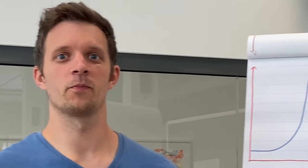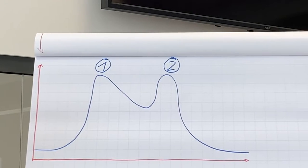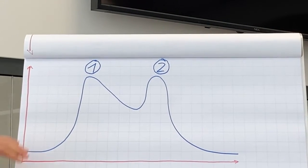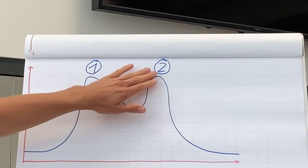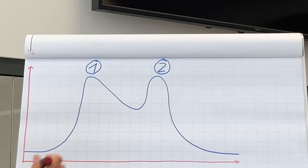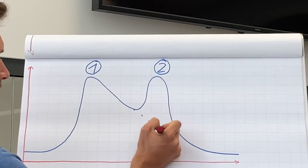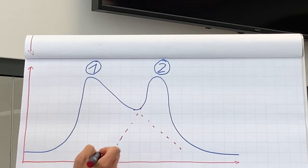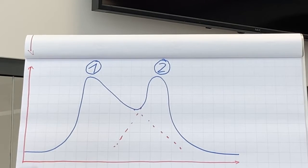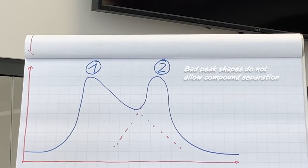But what do bad peak shapes actually look like? As you can see, peak number one and peak number two overlap and they are not separated. But why is this bad? Both peaks cannot be fractionated separately and we are not able to purify our sample.